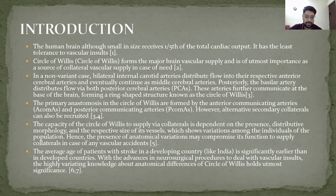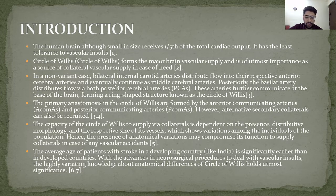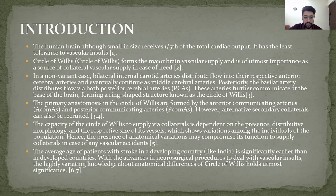The primary anastomosis of the circle of villas are formed by the anterior communicating arteries and posterior communicating arteries. However, alternate secondary collaterals can be recruited. The capacity of the circle of villas to supply collaterals is dependent on the presence, distributed morphology, and the respective size of its vessels, which shows variations amongst individuals of the population.